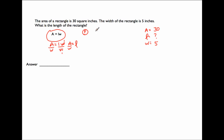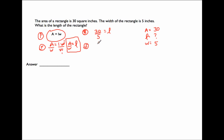Now let me plug values into this revised formula to find L. Area is 30, W is 5, so 30 divided by 5 equals L. Let's solve: 30 divided by 5 is 6. Don't forget units — this is a length, so the answer is 6 inches.